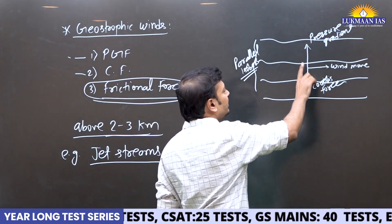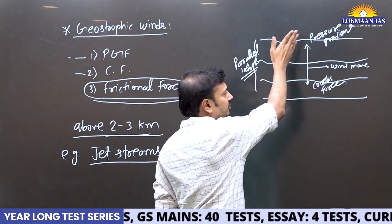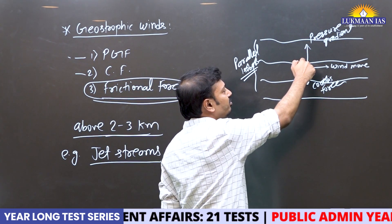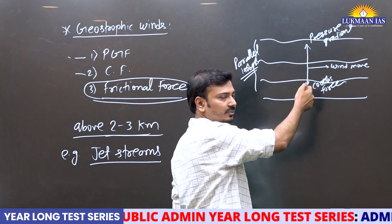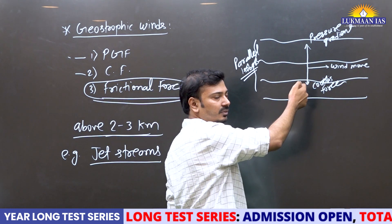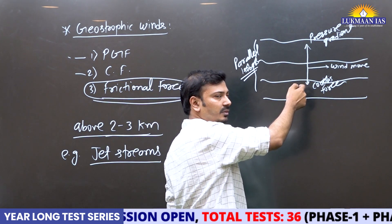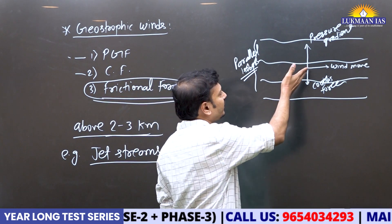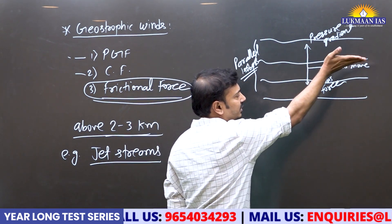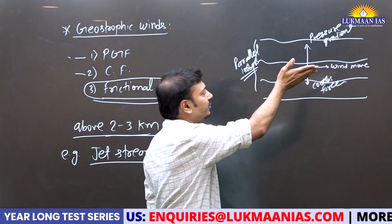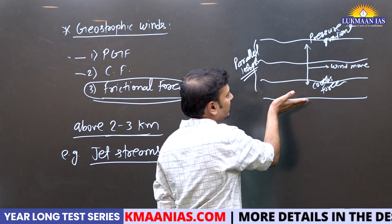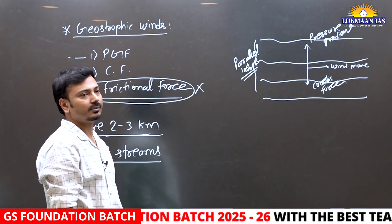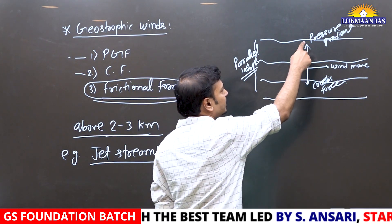When the pressure gradient is acting in this direction — from high pressure to low pressure — the other force that balances it will act in the opposite direction. The air will try to be in equilibrium; the Coriolis force will try to balance, and in that case the wind will move in the direction of the isobars — not deflected to either side, but parallel to the isobars.